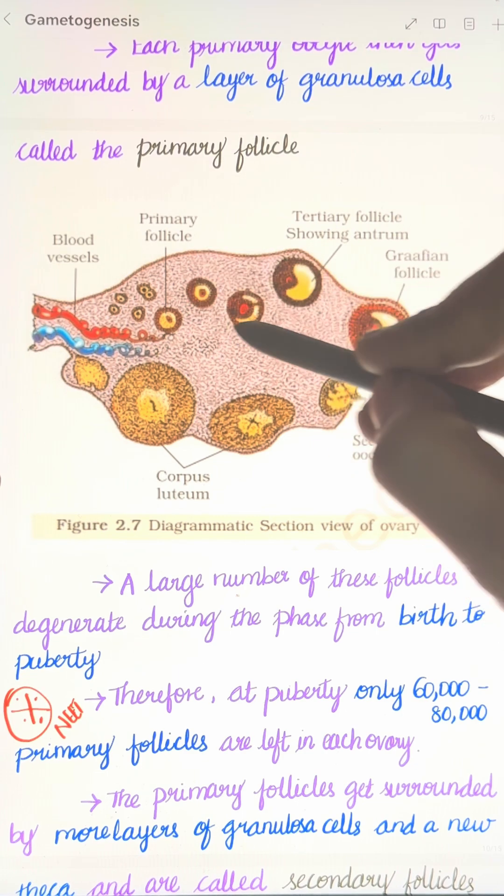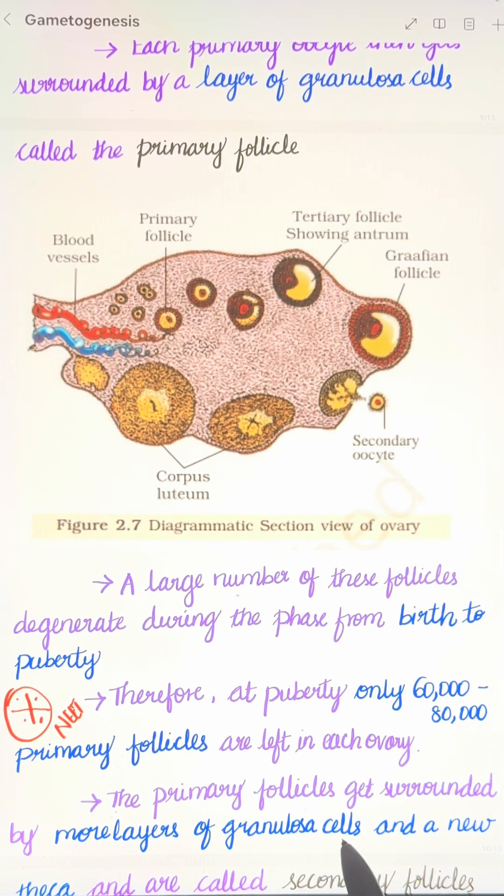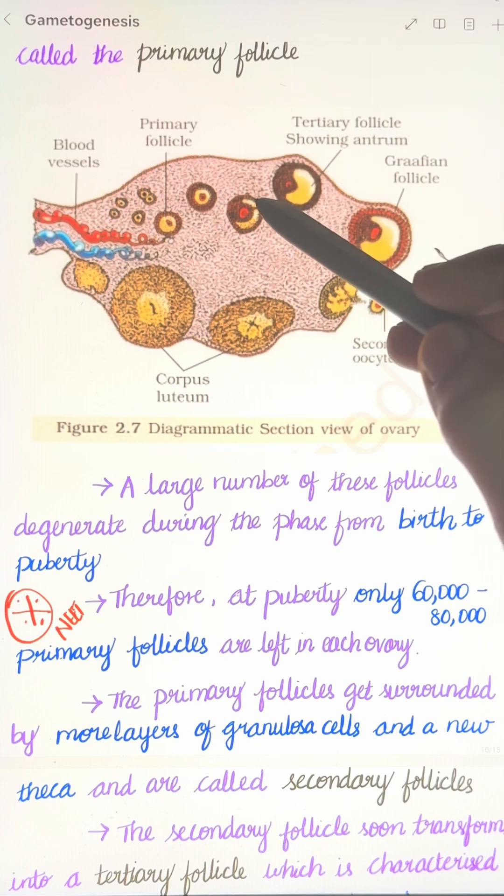The primary follicles develop more layers of granulosa cells and a new theca layer, forming secondary follicles.